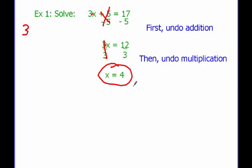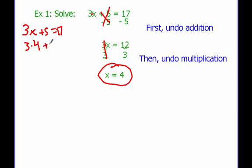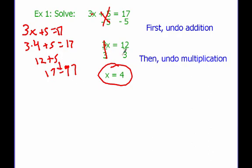We can check our work by plugging this in. We have 3x plus 5 equals 17. We're going to replace that x with a 4. Working this out using the order of operations: 3 times 4 is 12, and 12 plus 5 equals 17. We notice that what we have on both sides of the equation matches — 17 equals 17. We know our answer works. So x equals 4.